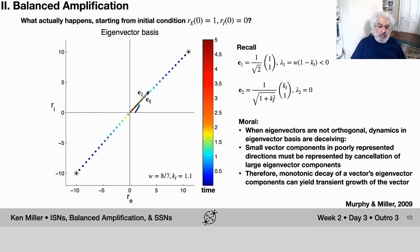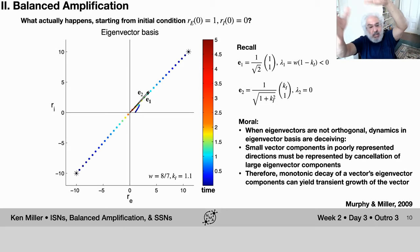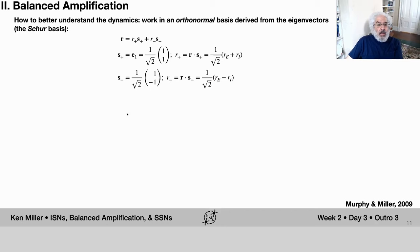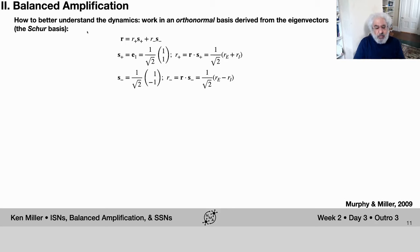The moral is: when the eigenvectors are not orthogonal, the dynamics in the eigenvector basis are deceiving. Small vector components in poorly-represented directions must be represented by cancellation of large eigenvector components. As one large component decays away, it reveals another large component, yielding transient growth. In 100 or 1000 dimensions this becomes arbitrarily complicated transient dynamics, even though as time goes to infinity everything decays to zero. The eigenvector picture is nice because components are decoupled, but it's not an orthonormal basis and so our intuitions are wrong.